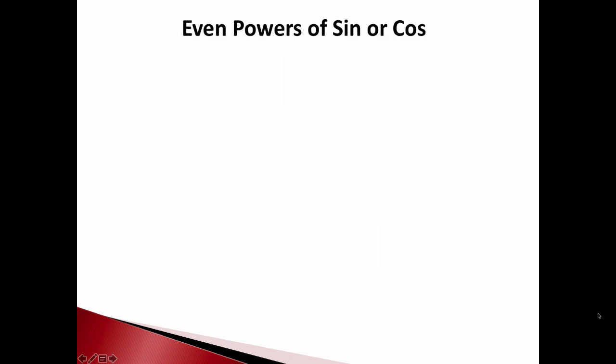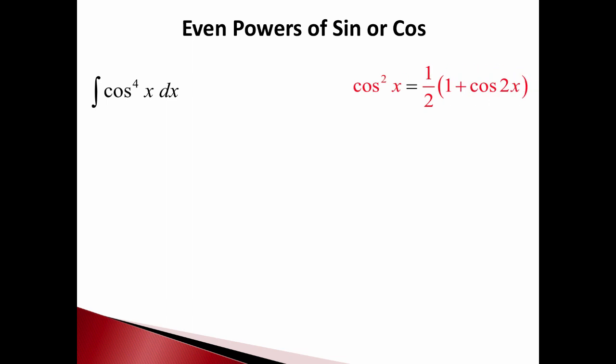In general we can play this same game whenever we have even powers of sine or cosine. For example, suppose we had cosine to the fourth. Our trig identity rides to the rescue again. We can take cosine to the fourth and write it as cosine squared, all squared. If I had cosine to the sixth, I'd write it as cosine squared all cubed. So cosine to any even power, you could write it as cosine squared to some power.